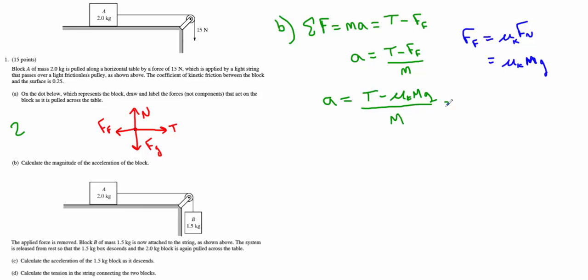If I plug in appropriately, I'm going to have 15 newtons minus 0.25 times 2 kilograms times 10 meters per second squared, all of that divided by 2 kilograms. Go ahead and type this into my calculator. And I am getting a value of 5 meters per second squared. Now if you use g as 9.81, you would get a slightly larger value. And B was worth 3 points.